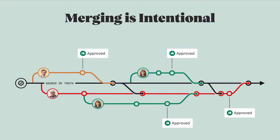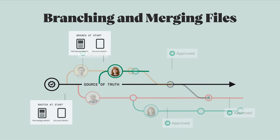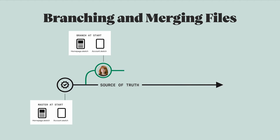Let's dig in a little here to see what actually happens to your files, both on master and on your branch, when you merge design work. Remember from our previous videos about branching that every branch starts out as an exact replica of the master or branch that it was created from. So when you branch from master, the files look exactly the same in both places.